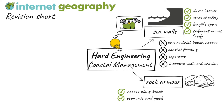Additionally, rock armour can be built in weeks rather than months, reducing the economic impact of its installation. It is versatile because it can be placed in front of a seawall, extending its lifespan. It can also be used to stabilise slopes on dunes. An environmental benefit is that it does not impede sediment movement along the coast by longshore drift.